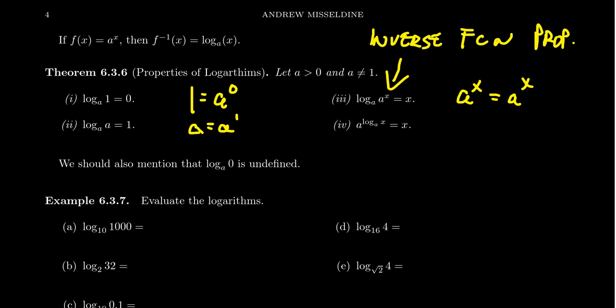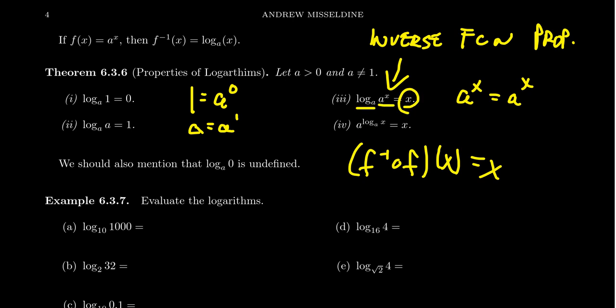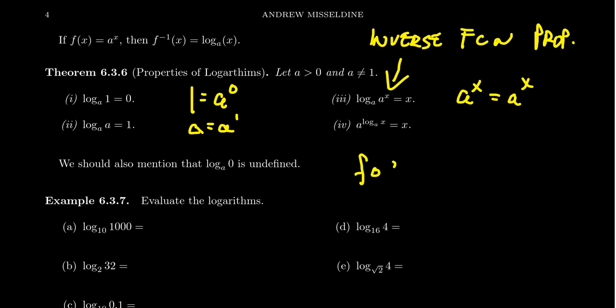What is the inverse function property? If you have a function and you compose it with its inverse function — f inverse of f of x — this always turns out to be x. A function composed with its inverse always gives you back x. And that's what you're seeing here: if you perform an exponential and then a logarithm, it's as if nothing happened. The inverse function property also goes the other way: what if you take f of f inverse of x? That's supposed to equal x as well. So what if you do a logarithm and then an exponential?